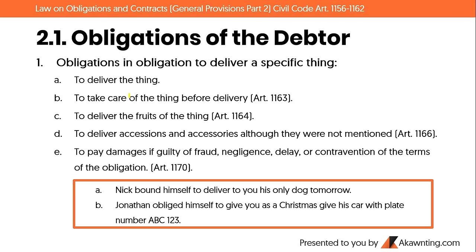D) To deliver the accessions and accessories, although they were not mentioned. For example, when you buy a smartphone, the charger, headset, and all necessary components must also be delivered by the seller — even if they were not explicitly mentioned. This is emphasized under Article 1166 — the phrase 'although they were not mentioned' is important.